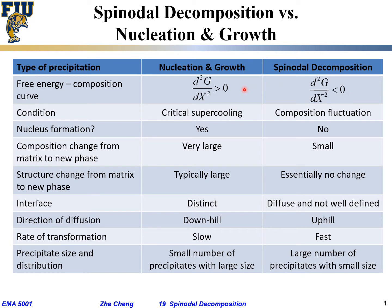On the other hand, for nucleation and growth, it typically occurs outside of the inflection points, in the section where the second order derivative of Gibbs free energy versus composition is positive, or concave up sections.